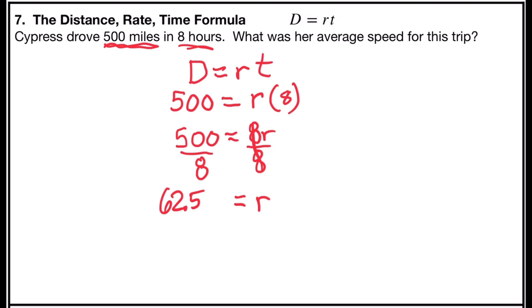And so the rate, the average speed for Cypress' trip, would be 62.5 miles per hour.